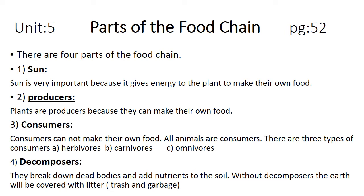The fourth part of the food chain are decomposers. Decomposers are very small organisms that break down dead bodies and add nutrients to the soil. Whenever a living thing dies, some animals feed on it, and the rest of the body decomposes through organisms like bacteria and fungi. Examples include ants and flies — they eat that body and convert it into nutrients, which are then added to the soil.